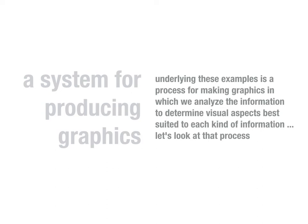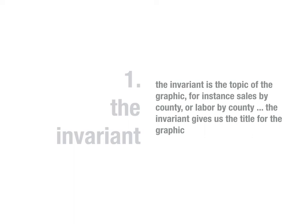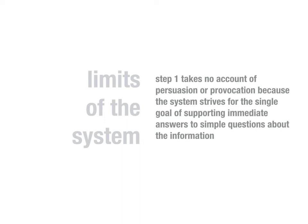Bertin is proposing a system for producing graphics. Underlying these examples is a process in which we analyze the information to determine the visual aspects best suited to each kind of information. The invariant is the first thing to look at — identify what stays the same across all relationships in the graphic before considering the components, which are the things that change. The invariant is the topic of the graphic, for instance sales by county or labor by county, and it gives us the title.